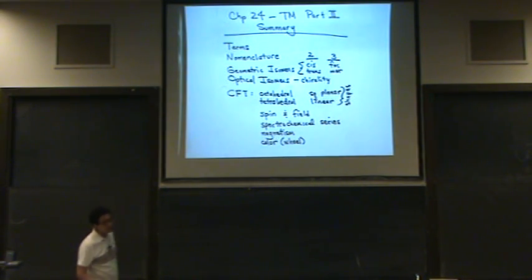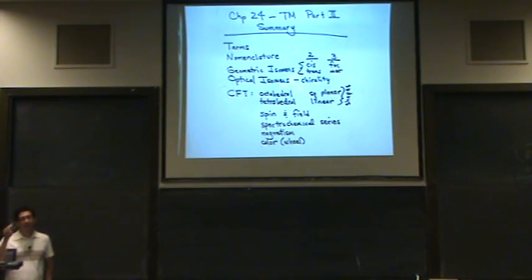Octahedral, tetrahedral, square planar, and linear. Know all those shapes, how to draw them. Be able to label the diagram for each of the d-orbitals. Know what all the d-orbitals look like.